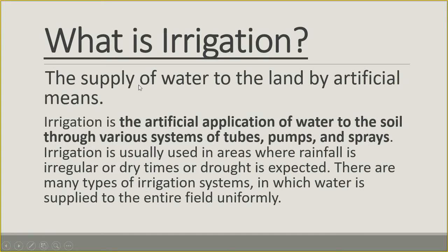Let's briefly look at the definition of irrigation. Irrigation means supplying water to the land by artificial means. This usually happens when rainwater is not sufficient, so you have to supply water artificially to irrigate the land and grow crops. Irrigation is the artificial application of water to the soil through various systems of tubes, pumps, and sprays. It is usually used in areas where rainfall is irregular or drought is expected. There are many types of irrigation systems in which water is supplied to the entire field uniformly.